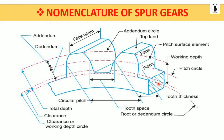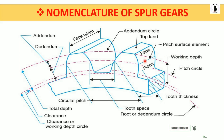The nomenclature of spur gears — the most important part of the gear that will be covered includes the pitch circle, which is shown as a dotted line. We will discuss in detail each terminology: the pitch circle, the working depth, the pitch surface element — that is the face or surface in contact with another gear — the face of the gear tooth, the top line, addendum, dedendum, face width, circular pitch, depth, clearance, and many more.